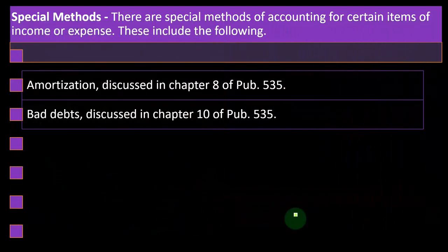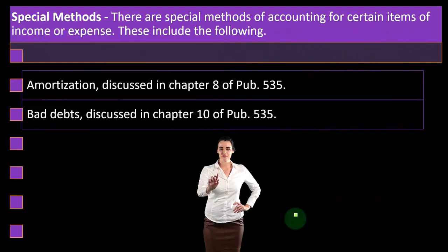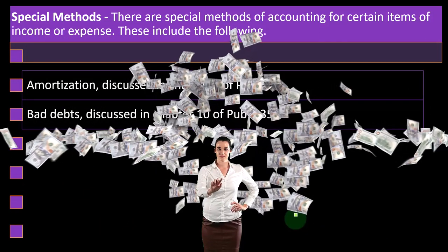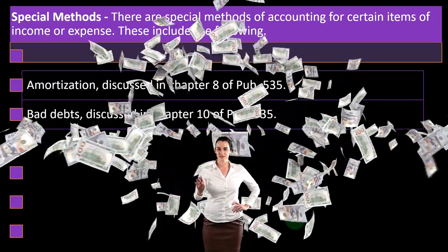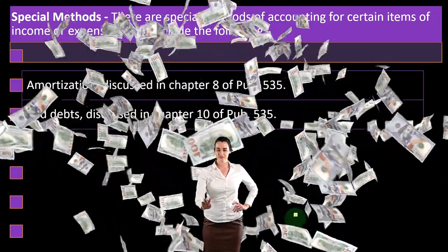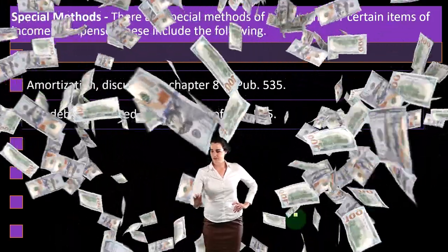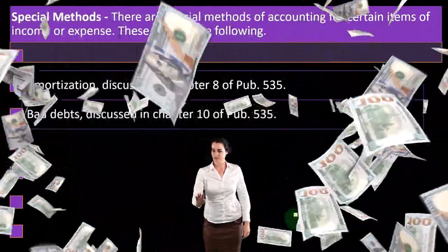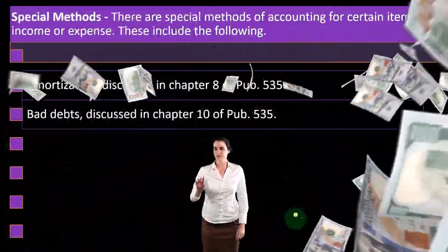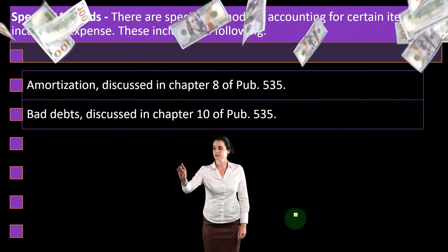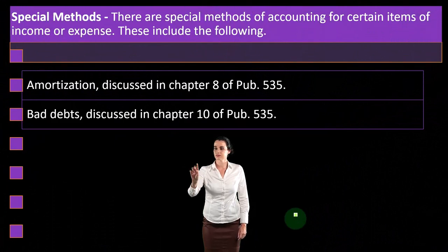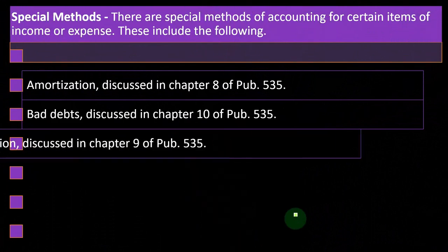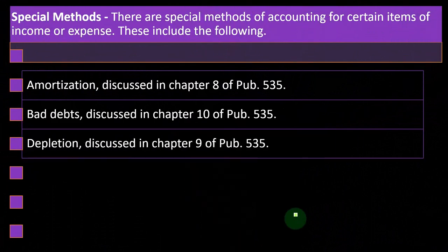The question is: when do you get to expense or deal with the bad debt? Because under accounting methods, there's an allowance method and a direct write-off method. And you've got to tie it out to what the tax code wants as well.